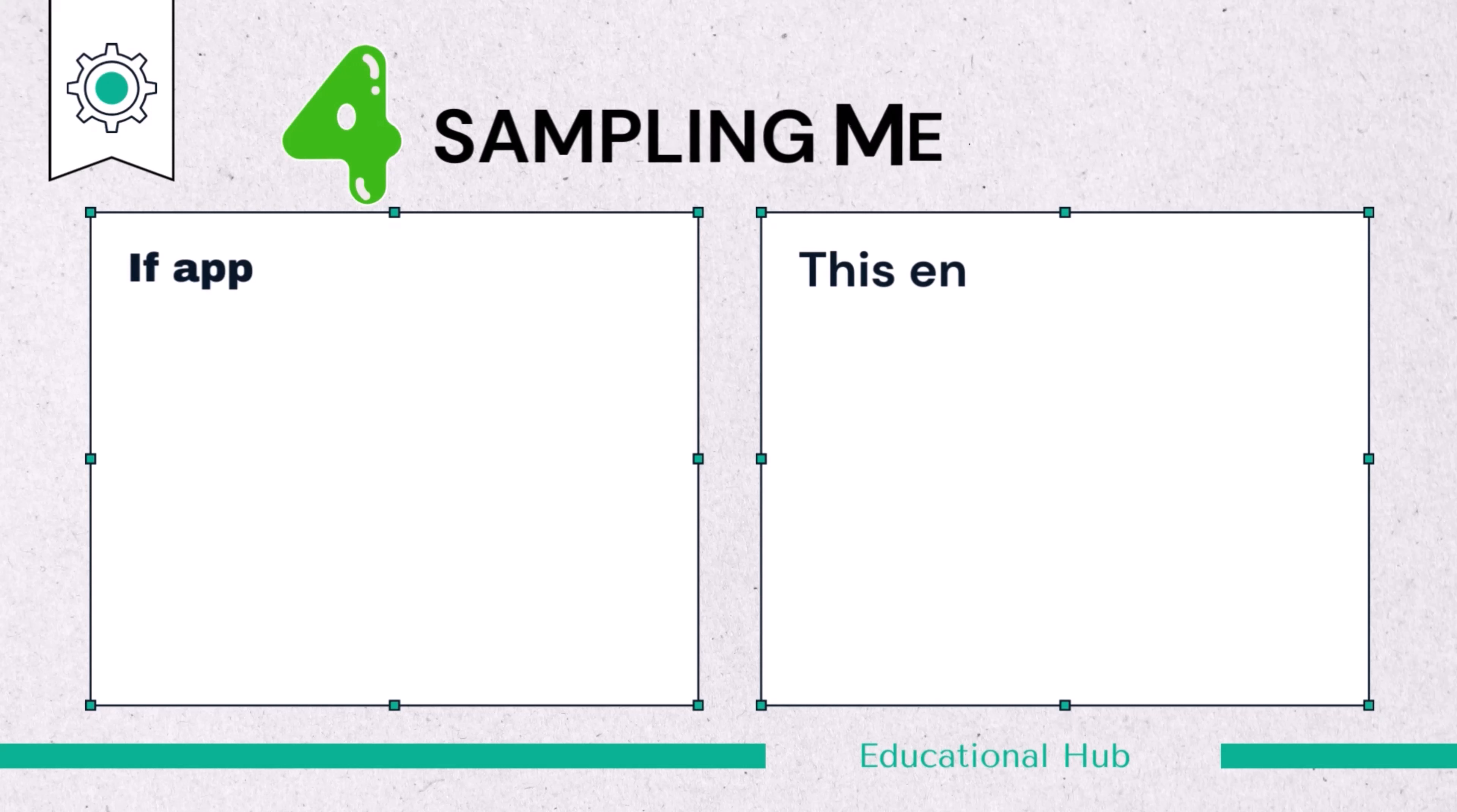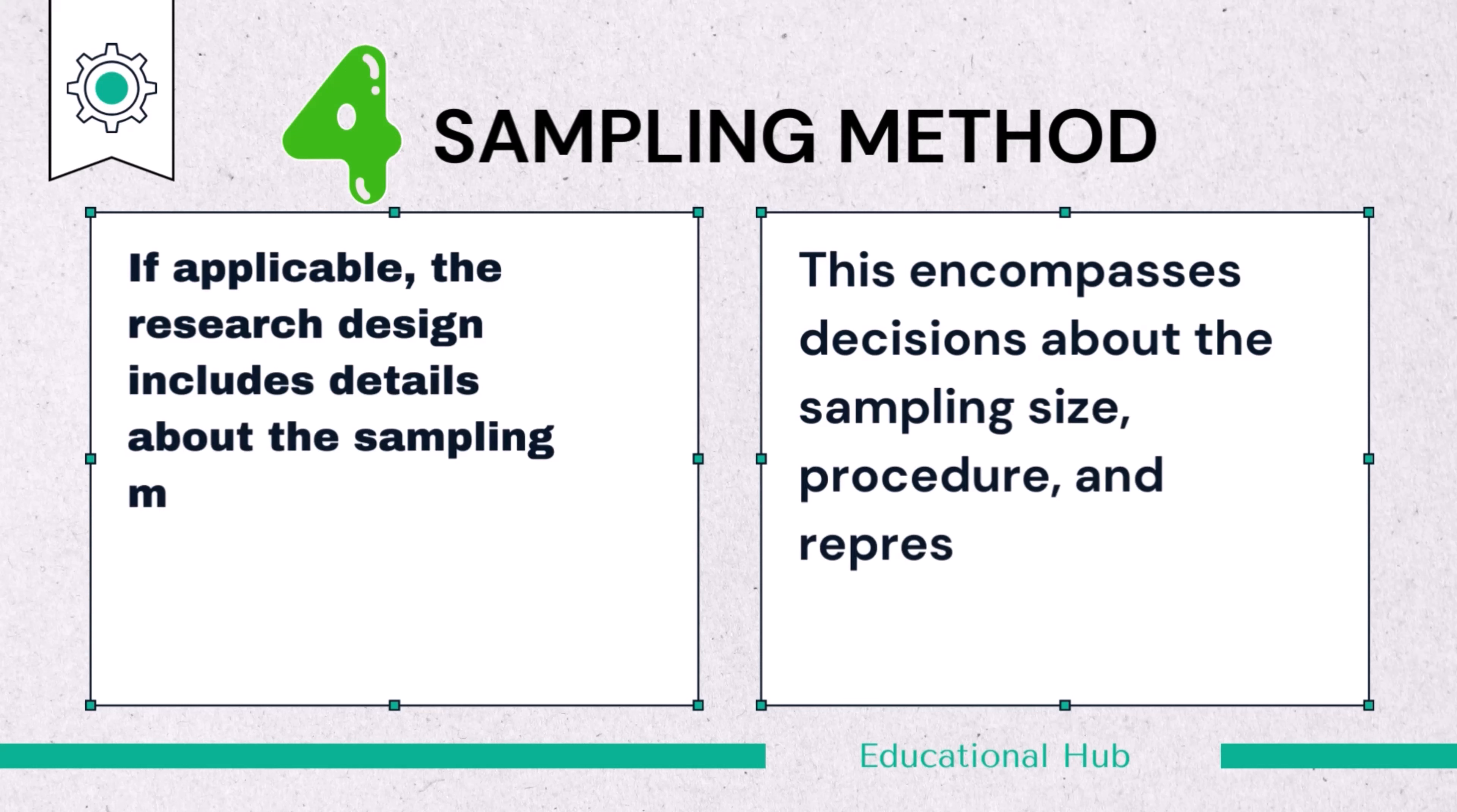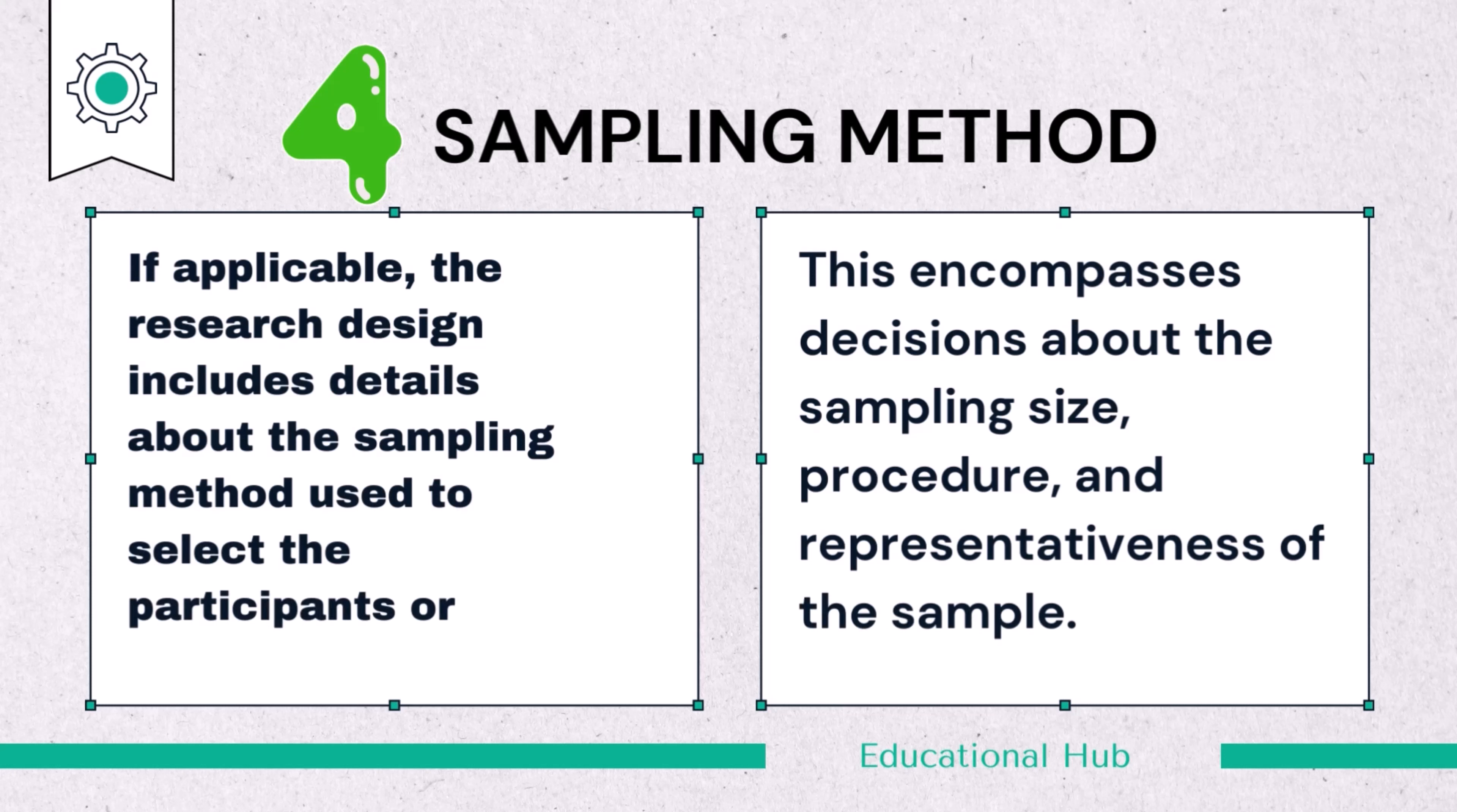4. Method. If applicable, the research design includes details about the sampling method used to select the participants or data points. This encompasses decisions about the sampling size, procedure, and representativeness of the sample.